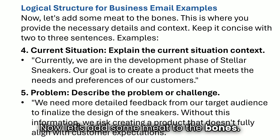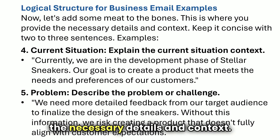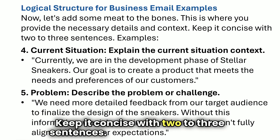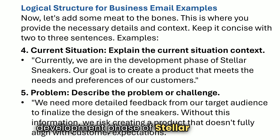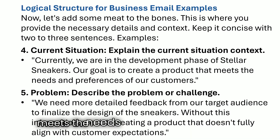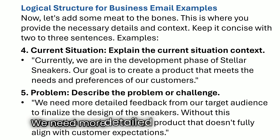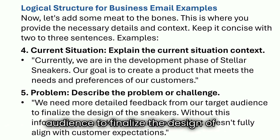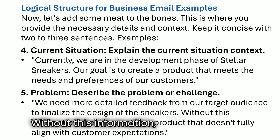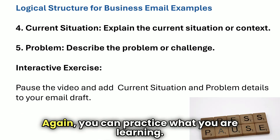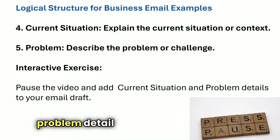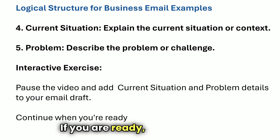Now let's add some body text — this is where you provide the necessary details and context. Keep it concise with two to three sentences. Current situation: 'Currently, we are in the development phase of Stellar Sneakers. Our goal is to create a product that meets the needs and preferences of our customers.' Problem: 'We need more detailed feedback from our target audience to finalize the design of the sneakers. Without this information, we risk creating a product that doesn't fully align with customer expectations.' Pause the video and practice writing the current situation and problem detail for an email you need to write.